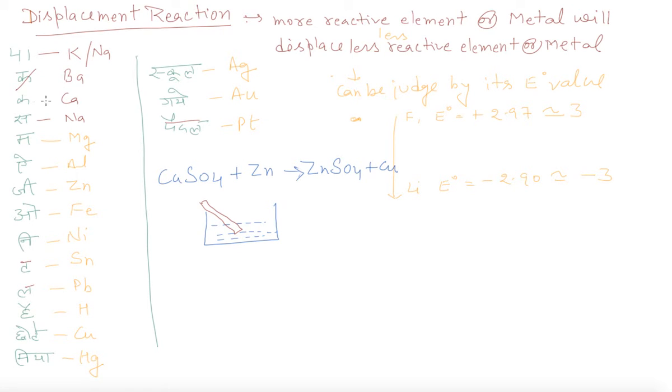P is called potassium, K is called barium, K is called calcium, S is called sodium, Ma se is magnesium, A is called aluminum, G is called zinc, O is called iron, N is called nickel, T acetine, La se is called lead, Ha se hydrogen, Cu copper.